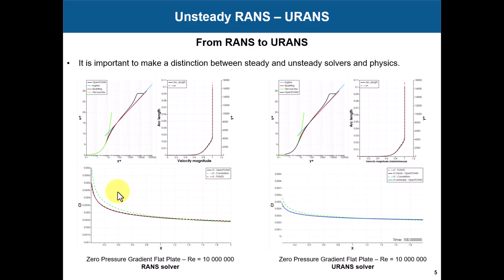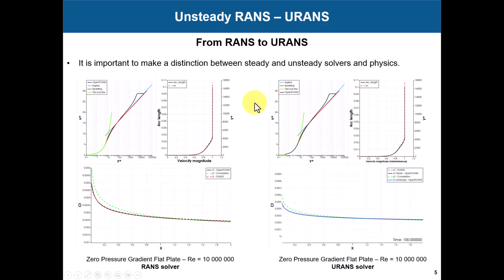Coming back to our validation case — the zero pressure gradient flat plate — as I mentioned, it is exactly the same case. We already did it with RANS models, and now we're going to move to URANS. We have exactly the same solution. The difference is that this one will probably be more time consuming because you need to resolve time — but sometimes that is not necessarily the case. Sometimes the steady case can be more time consuming for whatever reason, but generally speaking it should be faster.